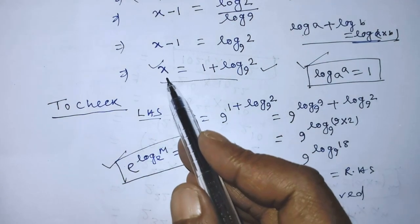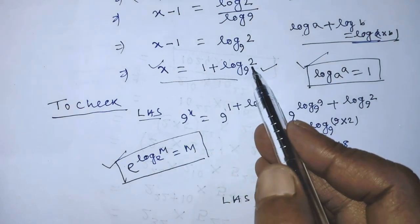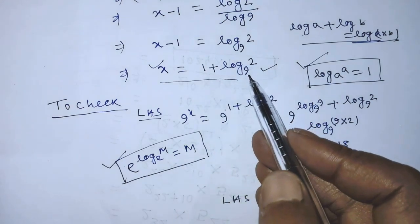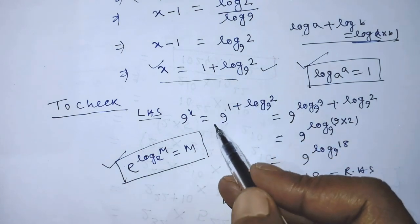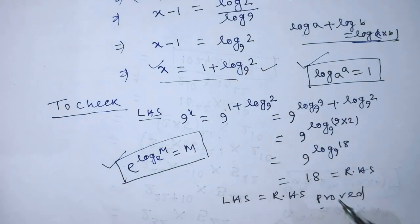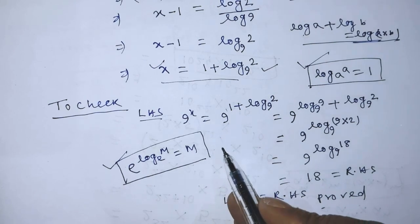It is clear that x is equal to 1 plus log of 2 to the base 9 is the solution of the given equation. Our answer is complete. If you like this video and these tricks, please support me and subscribe to my channel. Thank you. Bye-bye.